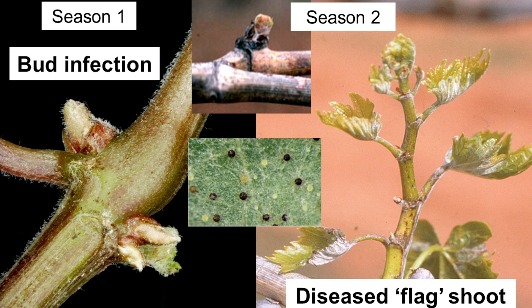The sources of primary powdery mildew inoculum in vineyards each season are through either overwintering infected buds and/or chasmothecia. Chasmothecia overwinter in the bark of vine cordons or trunks. In the following season, mostly between bud burst and flowering, overwintered chasmothecia release spores that infect young foliage nearby.